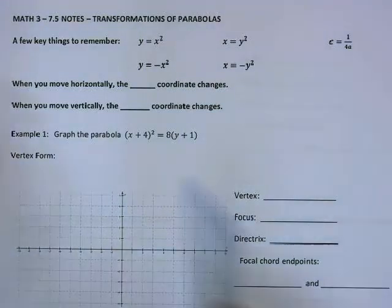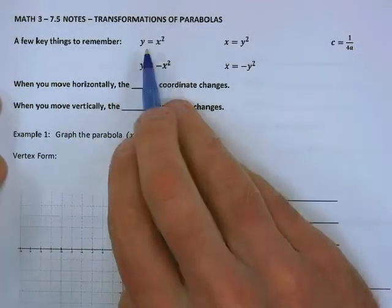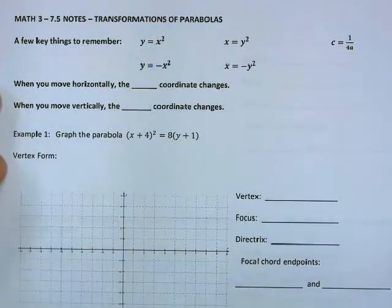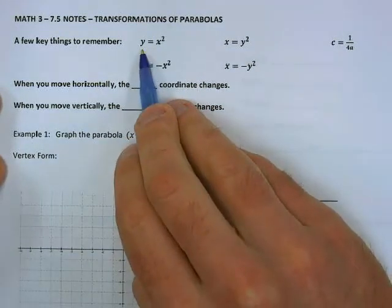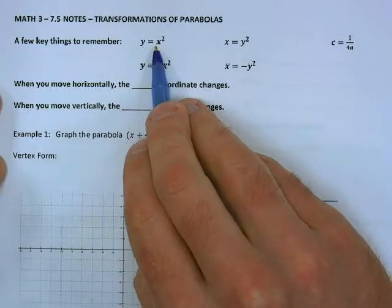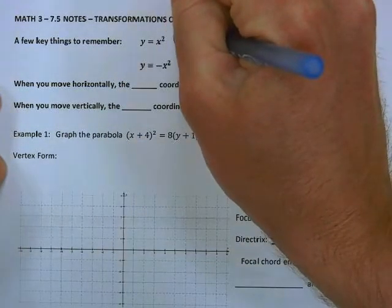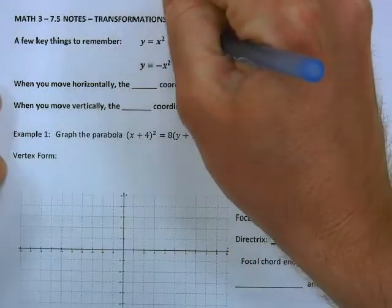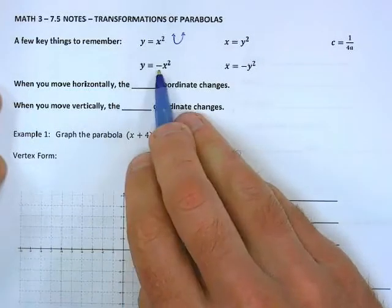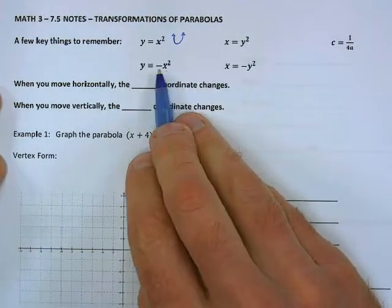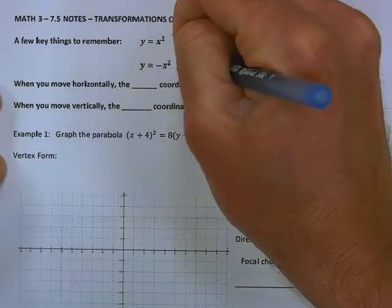First, a few key things to remember. If our equation looks like y = x², it's y to the first power equals x squared with a positive a value, and it's going to be opening up. If it's y = -x², a negative a value, that one is going to be opening down.